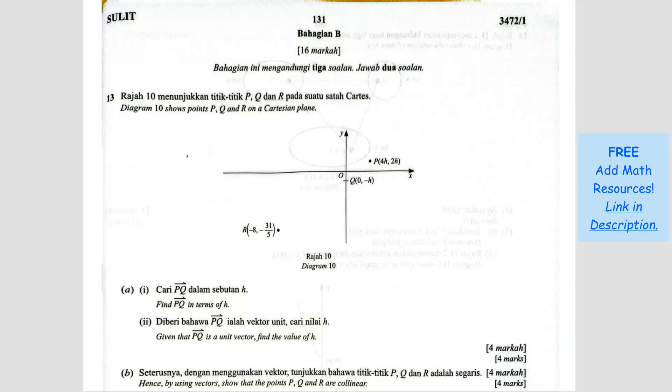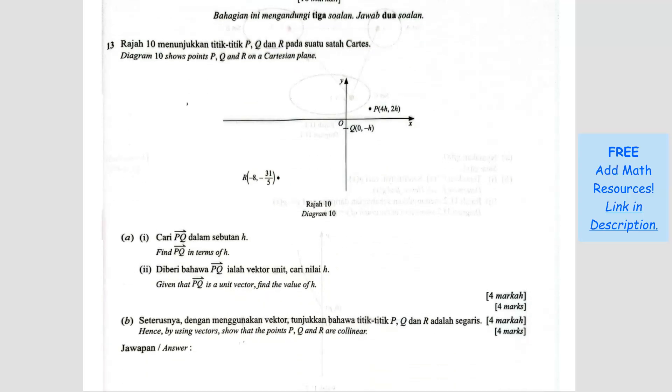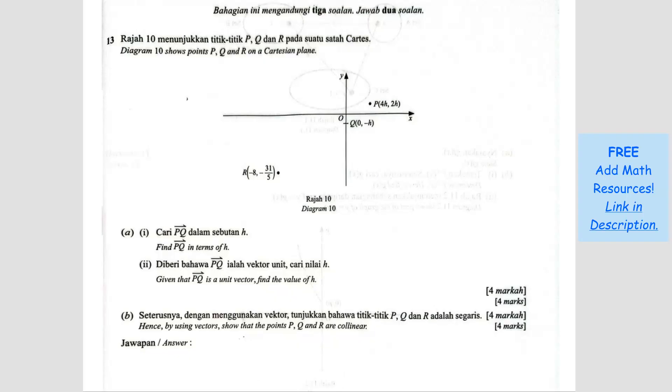Question number 13. Diagram 10 shows point P, Q and R on a Cartesian plane. Question A. Find PQ in terms of H. So we are looking for vector PQ. Vector PQ means what? P to O and O to Q.